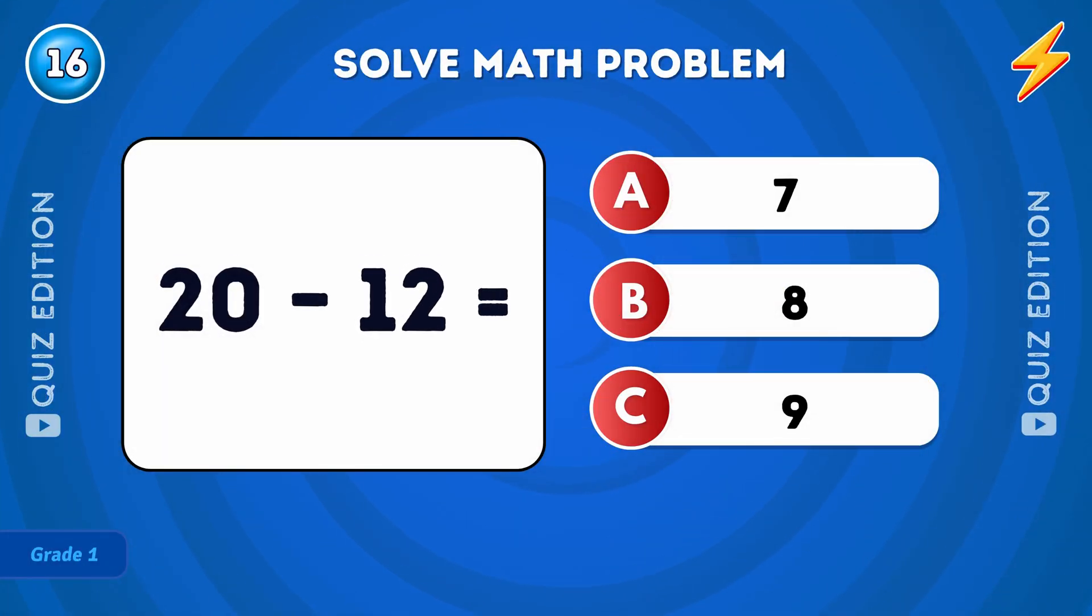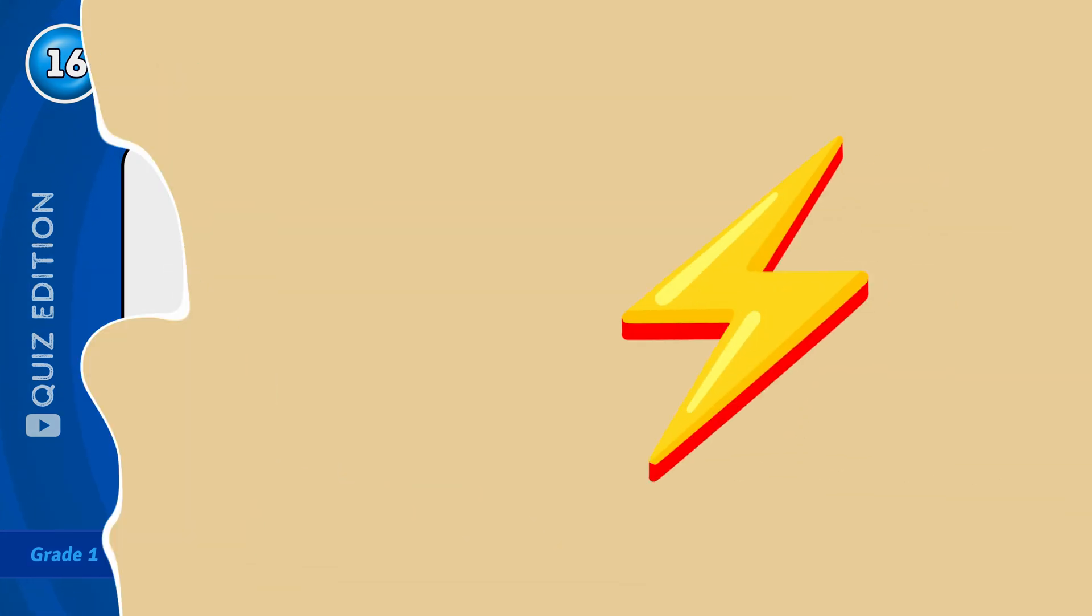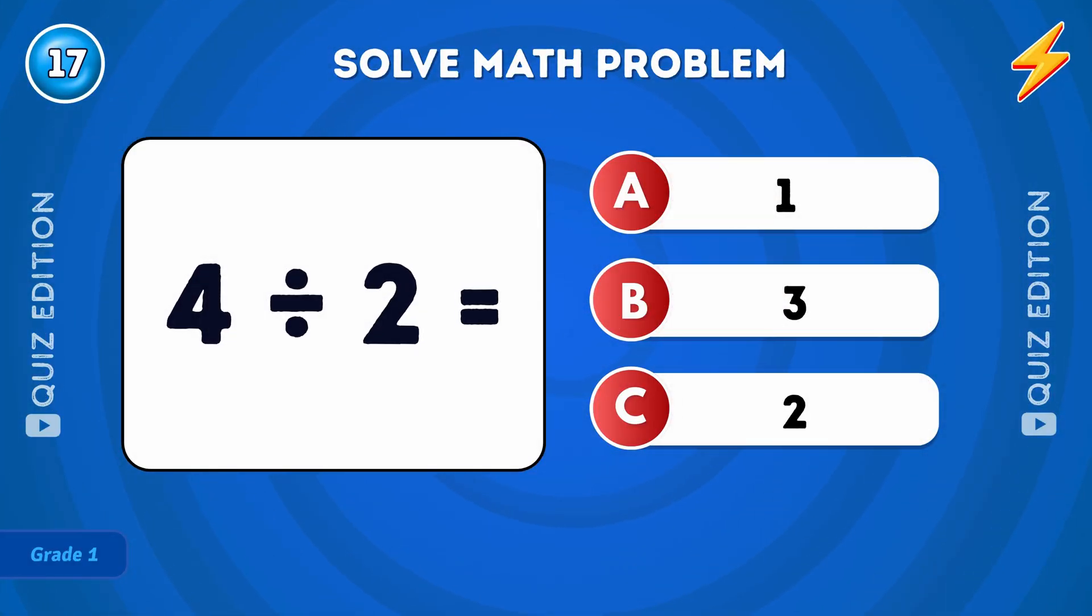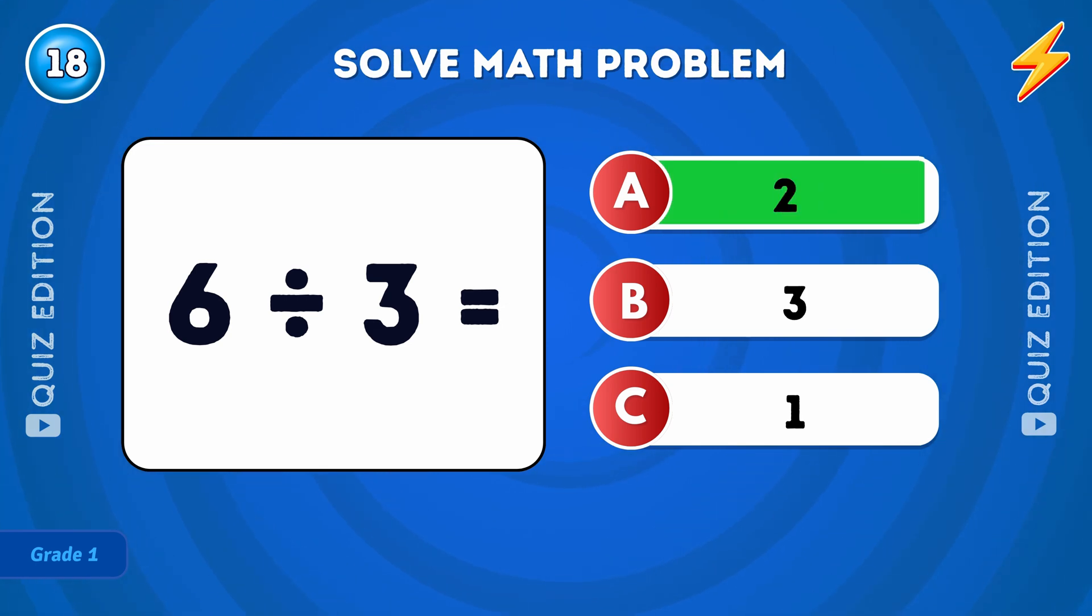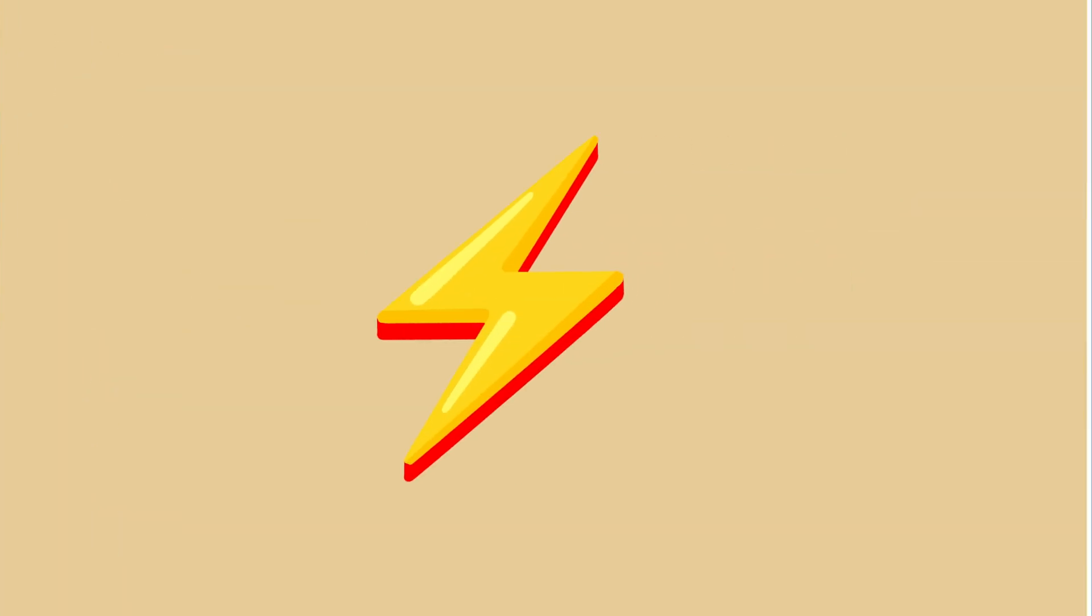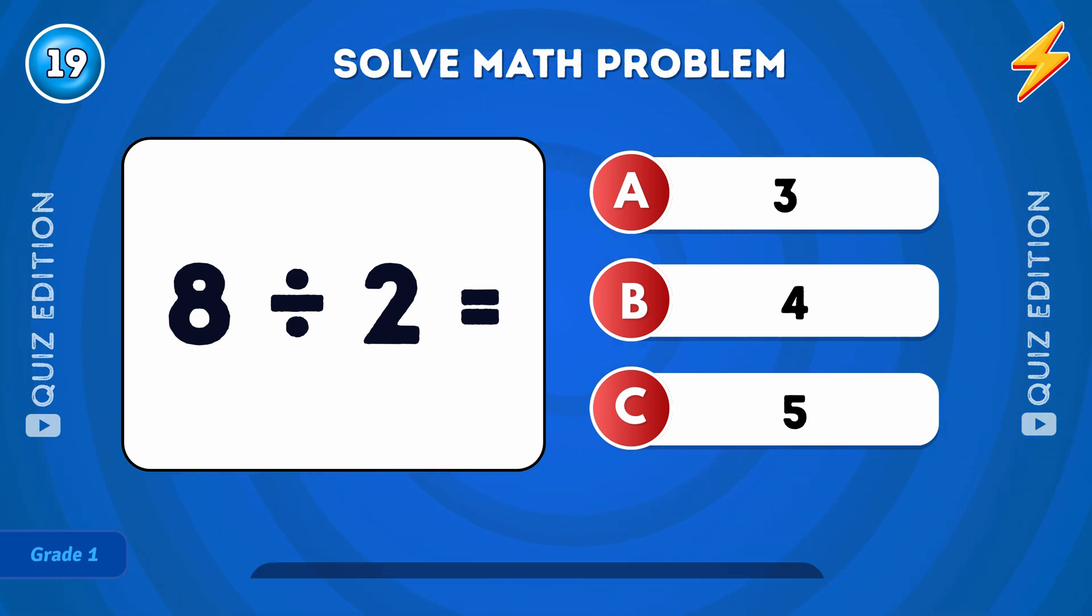What is 10 minus 12? The answer is 8. What is 4 divided by 2? The answer is 9. What is 6 divided by 2? The answer is 2. What is 8 divided by 2? The answer is 4.